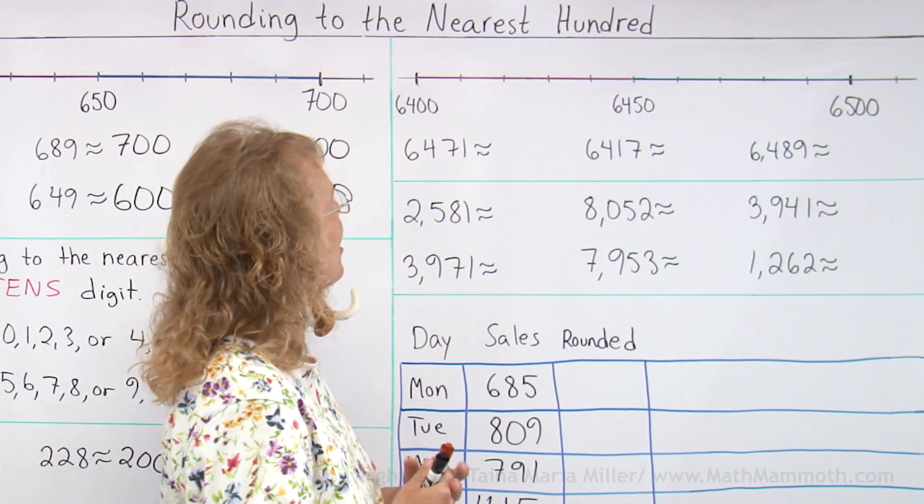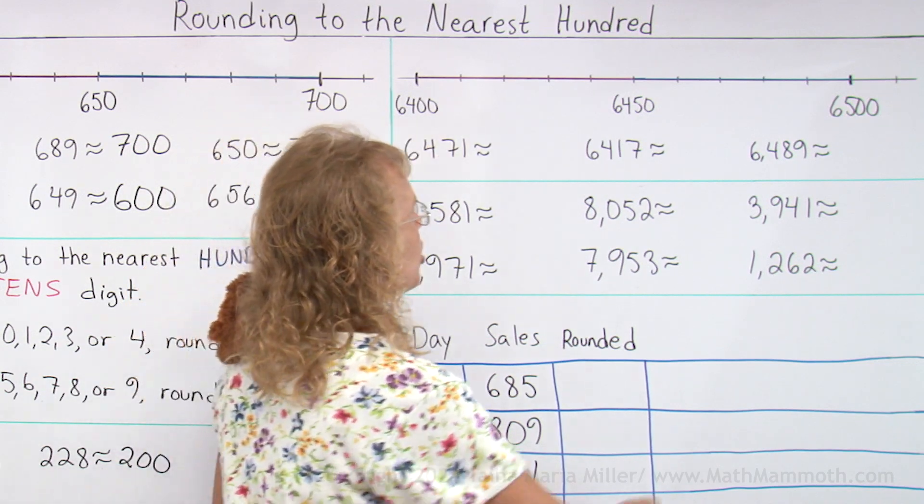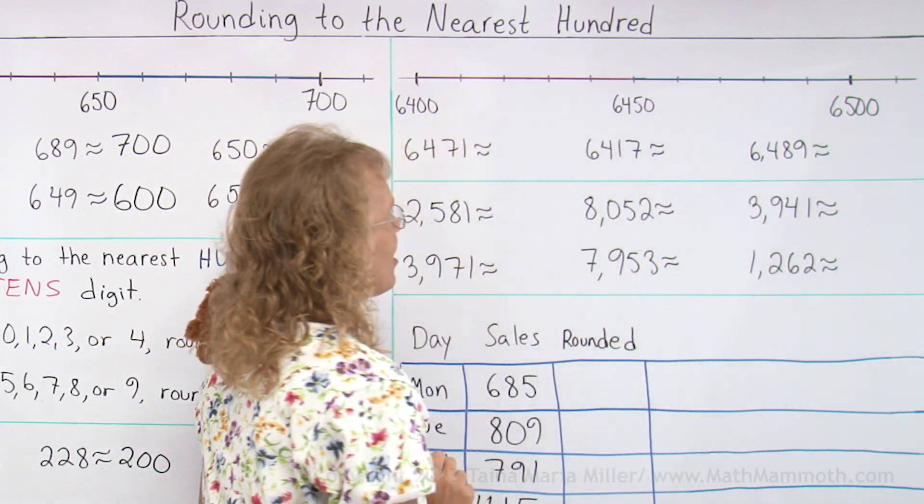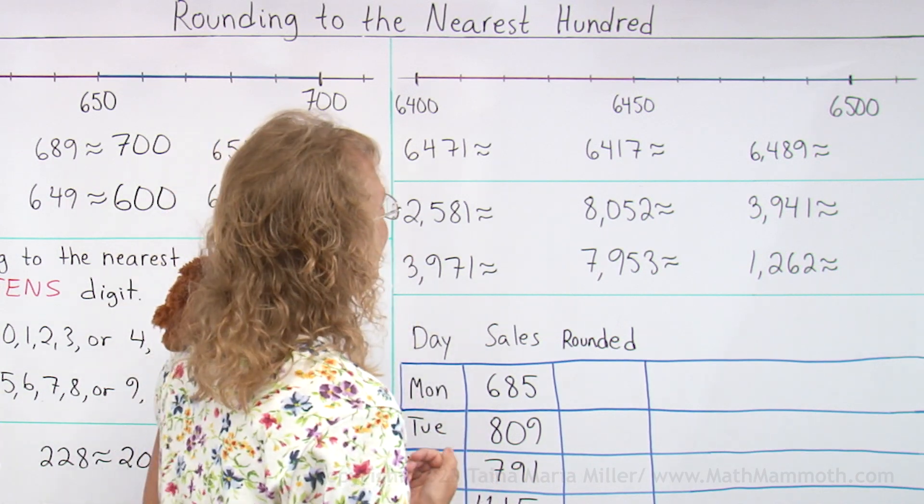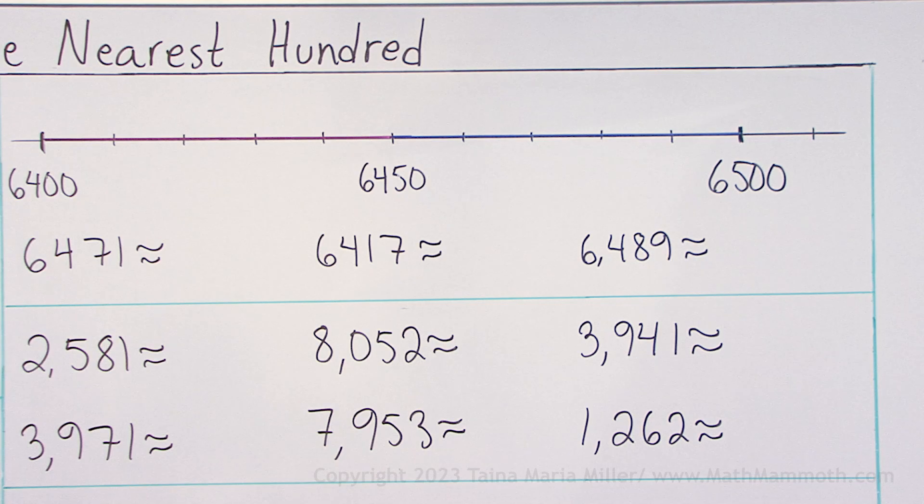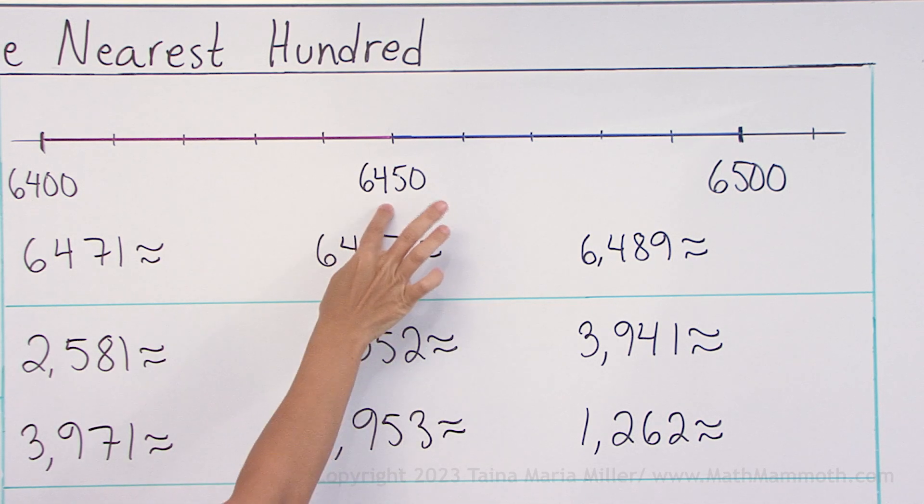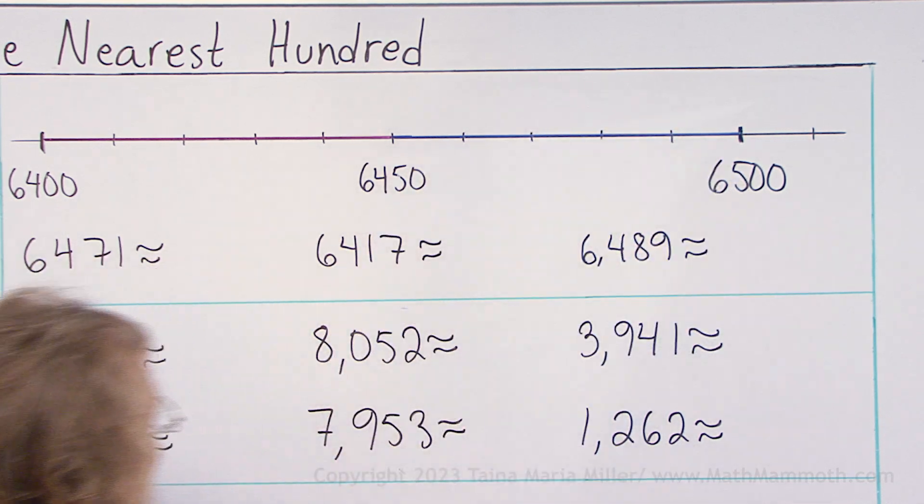Here I have another number line from 6400 to 6500. Again, we are rounding to the nearest hundred. We're doing the same thing. Here's the middle number, the middlemost number, 6450. So this one would get rounded to 6500.